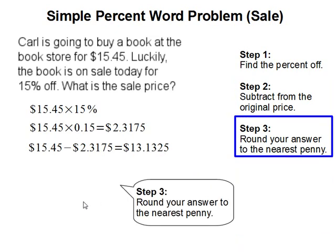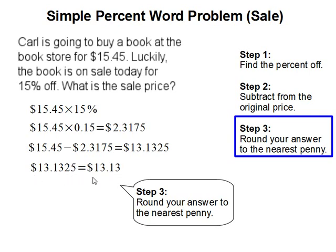Step 3: Round your answer to the nearest penny. Whenever we are dealing with money, the store is going to round what they charge you to the nearest penny. So 13.1325 gets rounded to $13.13. And this completes our problem.